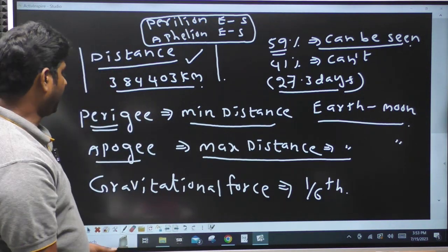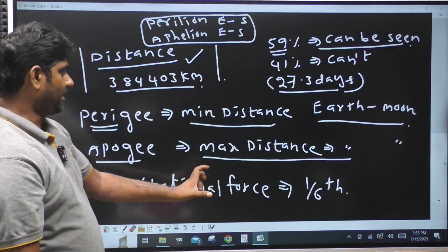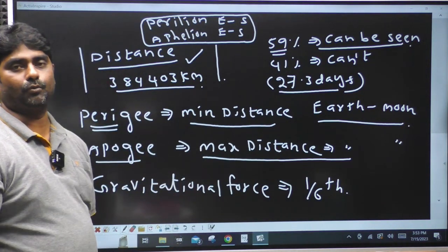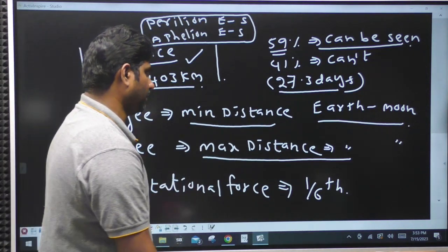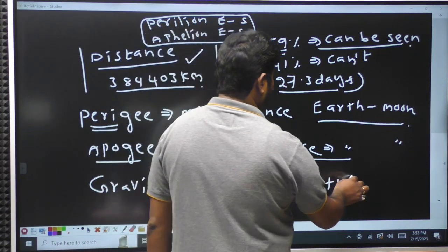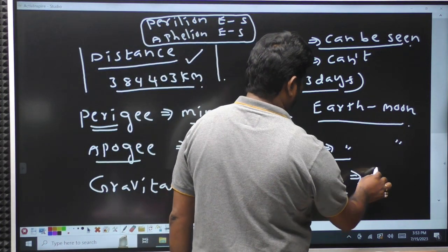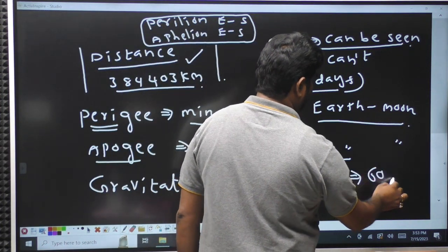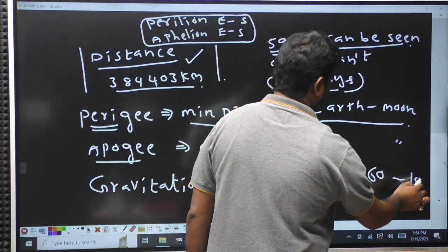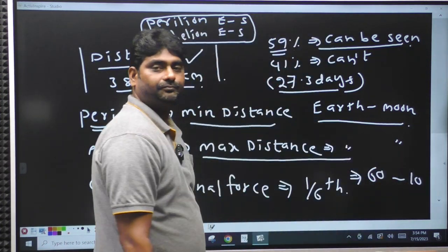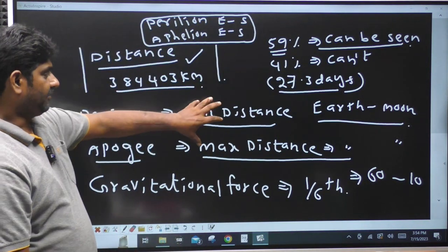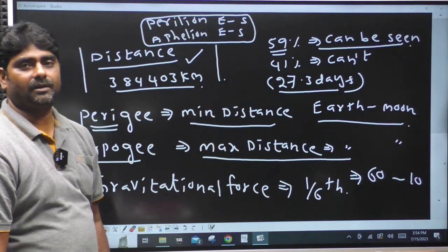The gravitational force on the Moon is one-sixth of Earth's. That means if you weigh 60 kg on Earth, you would weigh 10 kg on the Moon.